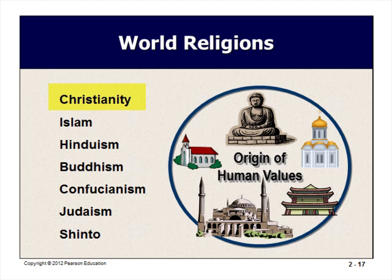Christianity was founded in Palestine 2,000 years ago among Jews who believed that Jesus of Nazareth was the Messiah. With 2 billion followers, it is the world's single largest religion, with more than 300 denominations, most being Roman Catholic, Protestant, or Eastern Orthodox. Roman Catholics are to refrain from placing materialism above God and people. Protestants believe that salvation comes from faith in God and that hard work gives glory to God. Christian organizations sometimes get involved in social causes that affect business policy.